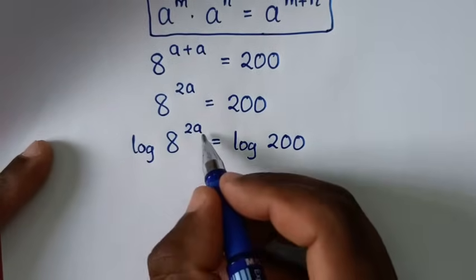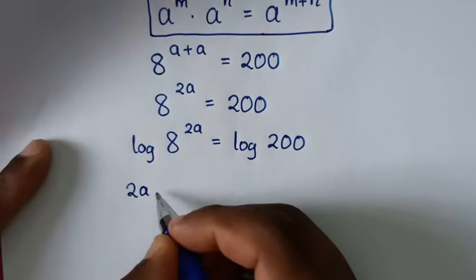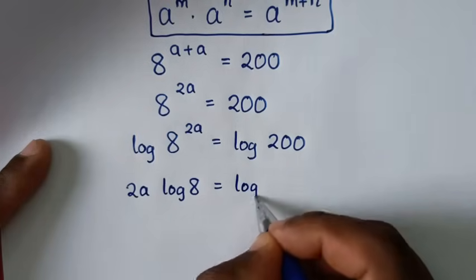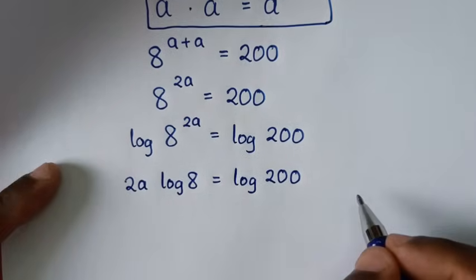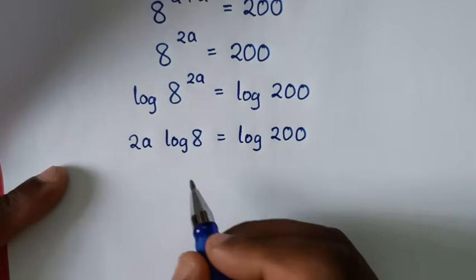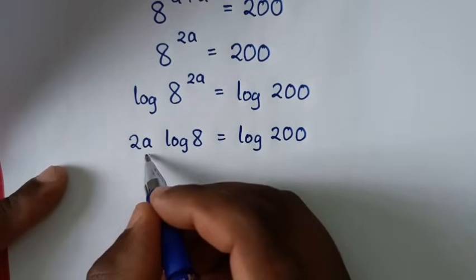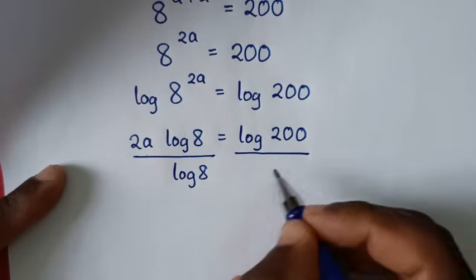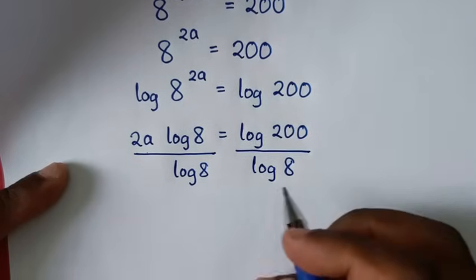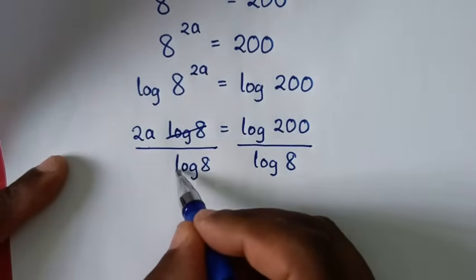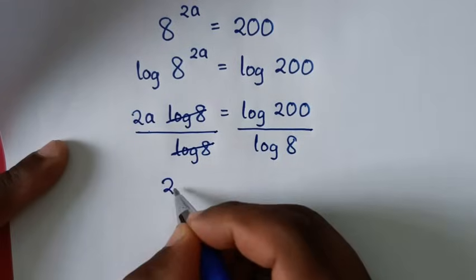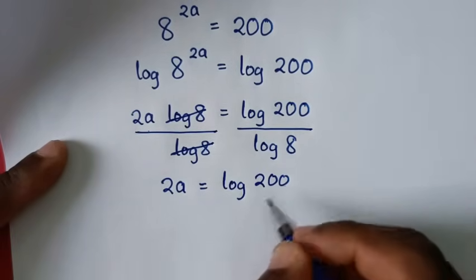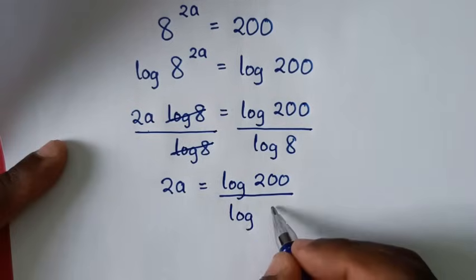Then this power of 2a will move to the front, so it will be 2a log of 8 is equal to log of 200. In the next step, we'll divide by log of 8 on both sides, so this log of 8 will cancel that log of 8, and it will be 2a is equal to log of 200 over log of 8.